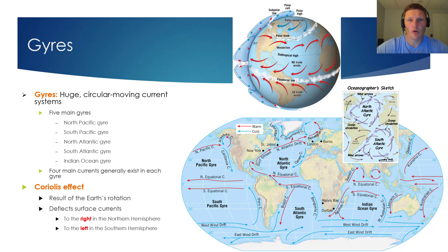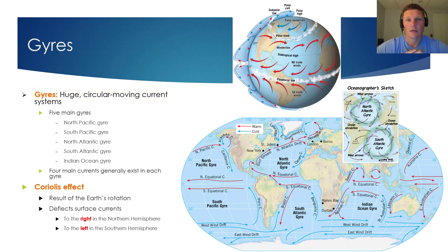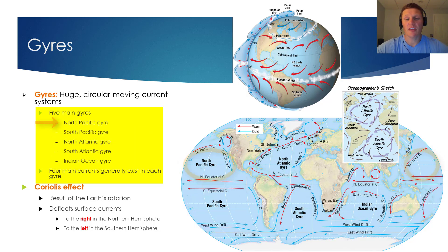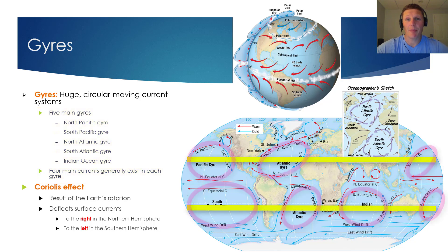You may have noticed that a lot of currents move in a circular pattern, and we call these large whirls of water within an ocean basin gyres. There are five main gyres that occur in Earth's oceans, namely the North Pacific gyre, the South Pacific gyre, the North Atlantic gyre, the South Atlantic gyre, and the Indian Ocean gyre. Notice that four main currents generally exist within each gyre. As an example, the North Pacific gyre consists of the California current, the North Equatorial current, the Kuroshio current, and the North Pacific current. It's also important to note that the center of each gyre coincides with the subtropics at either 30 degrees north or 30 degrees south. For this reason, gyres are sometimes called subtropical gyres.